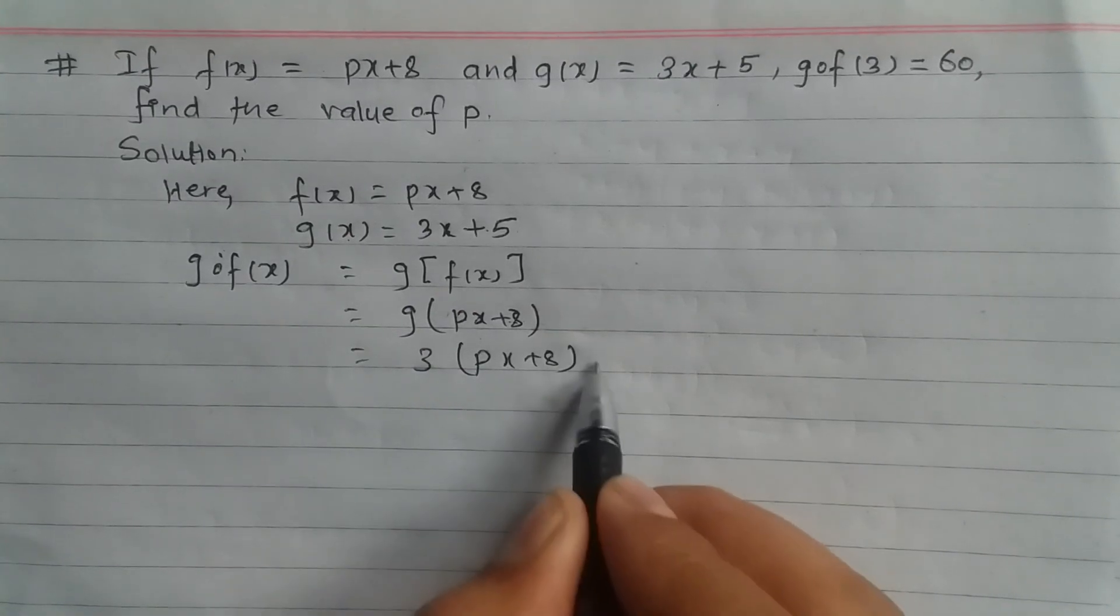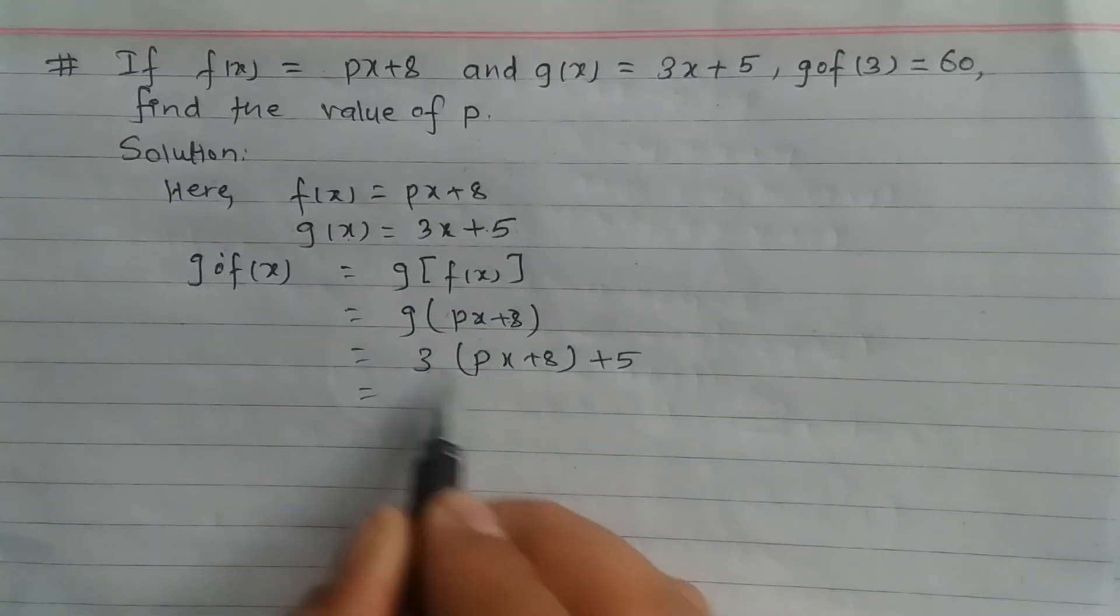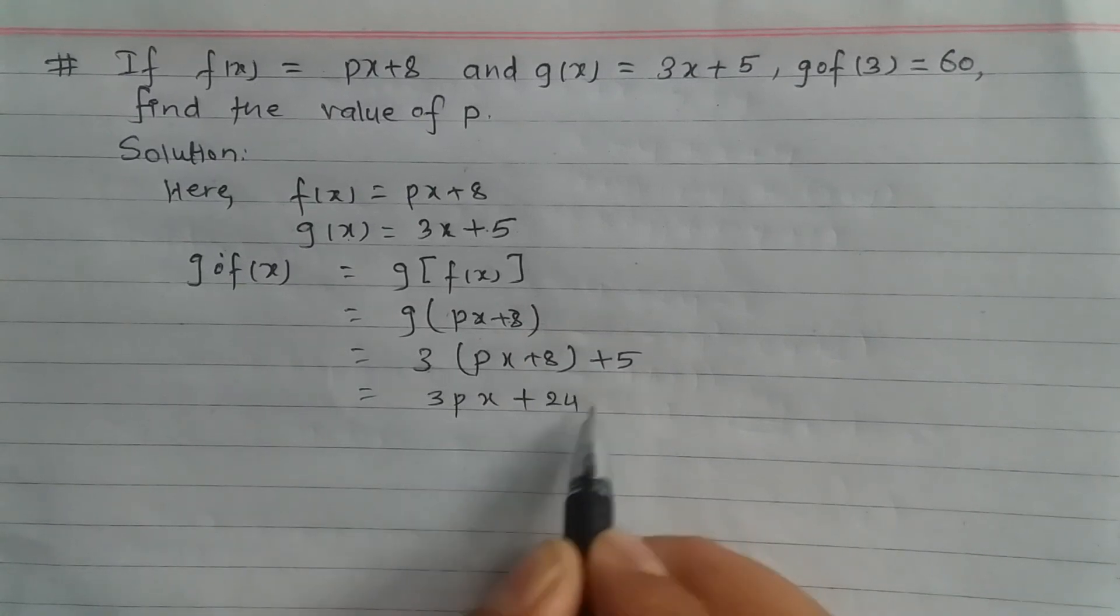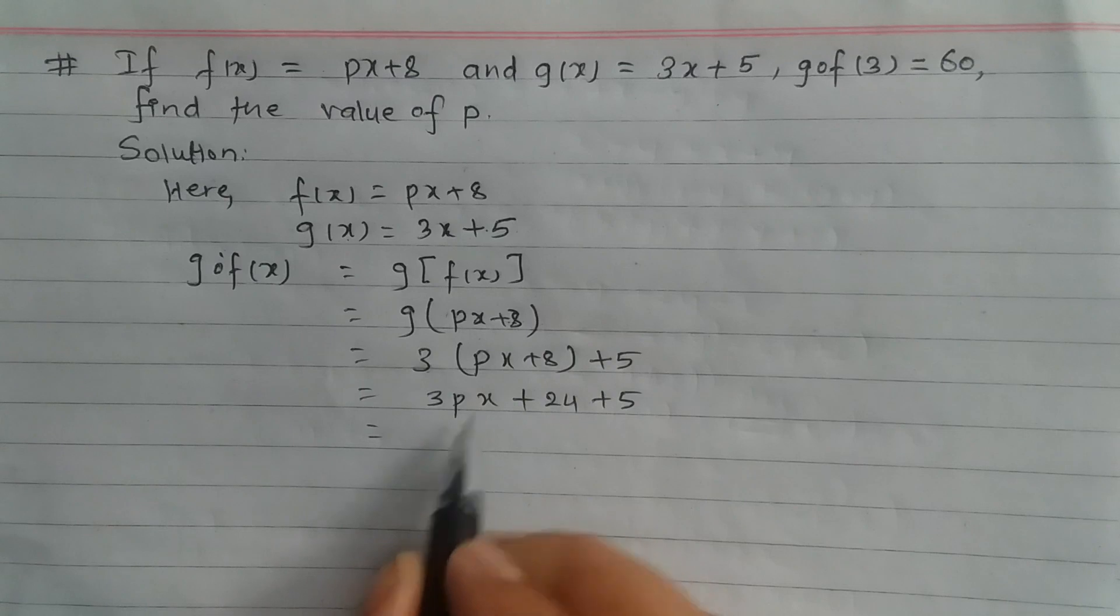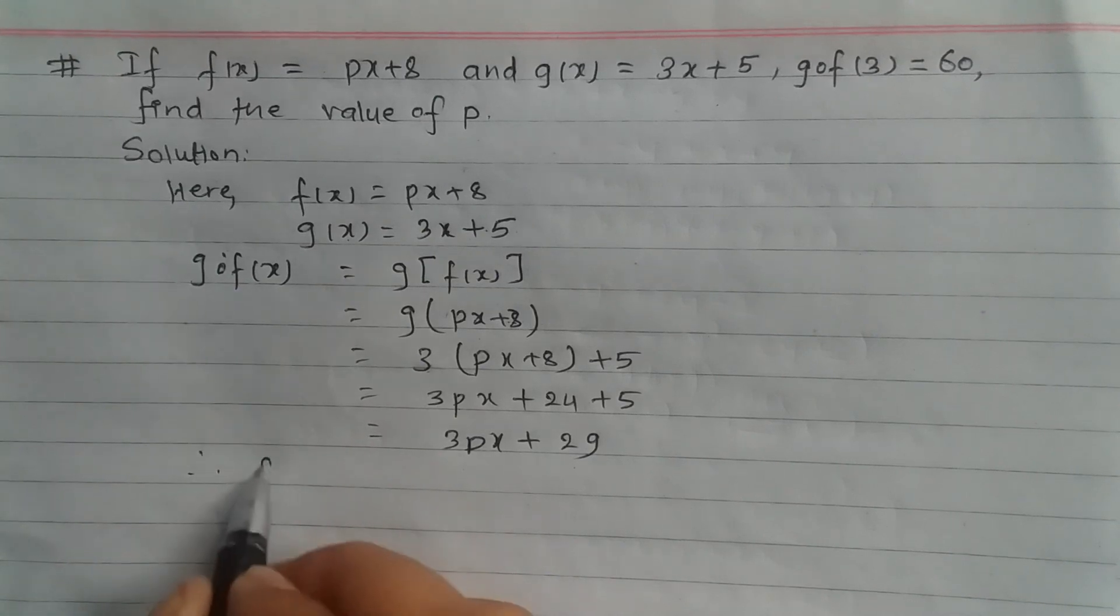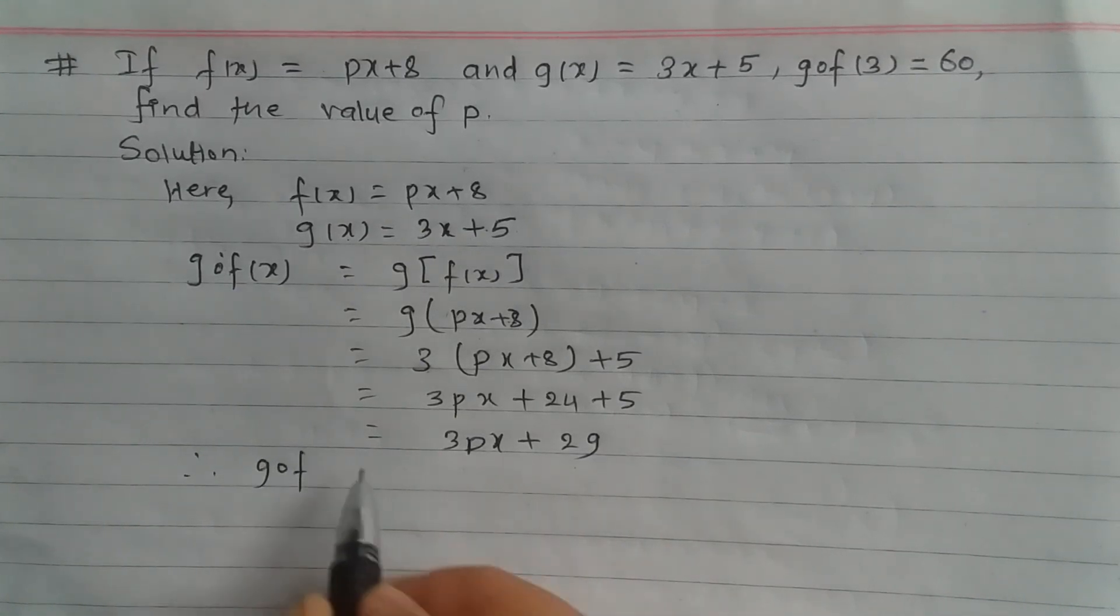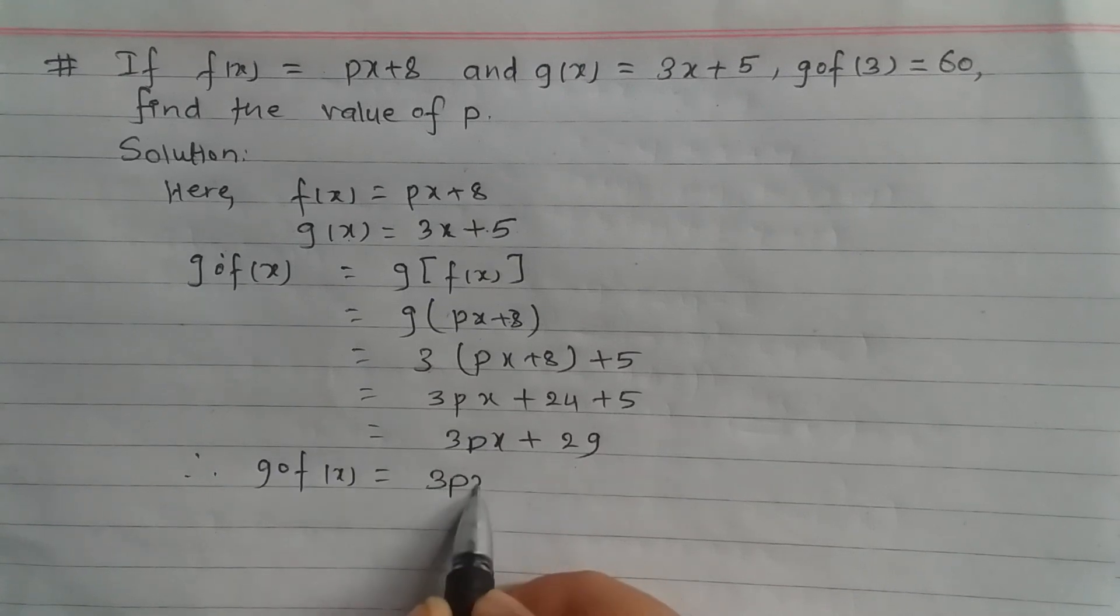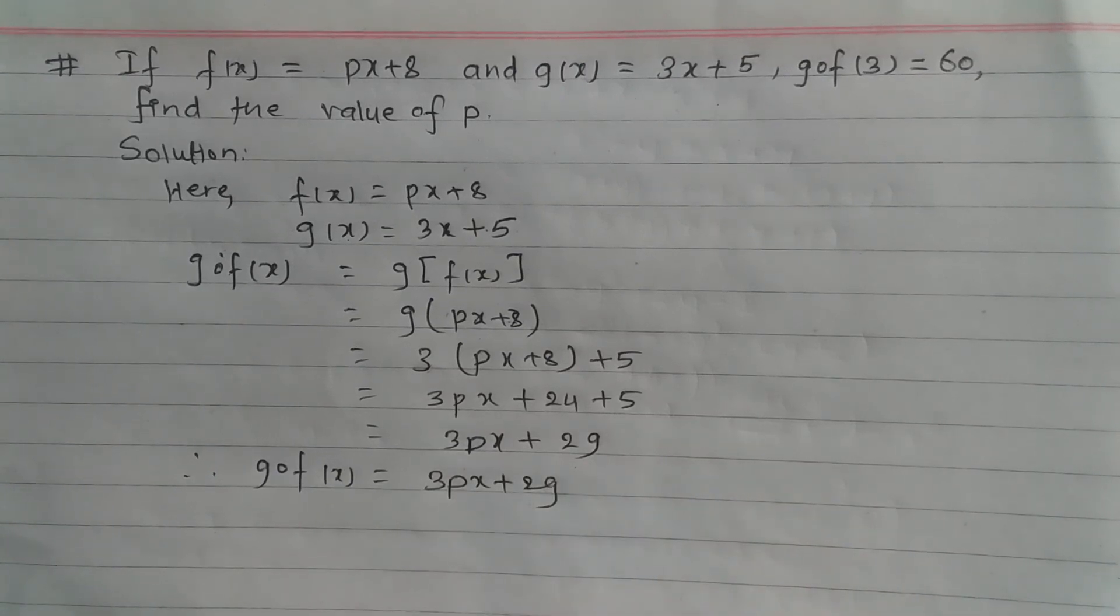Expanding this: 3(px + 8) + 5 = 3px + 24 + 5 = 3px + 29. Therefore, g composite f(x) = 3px + 29.